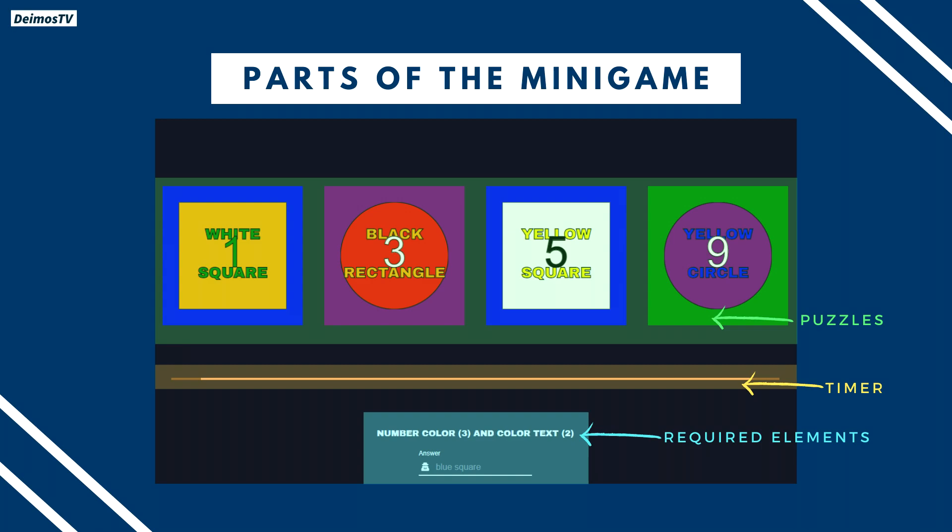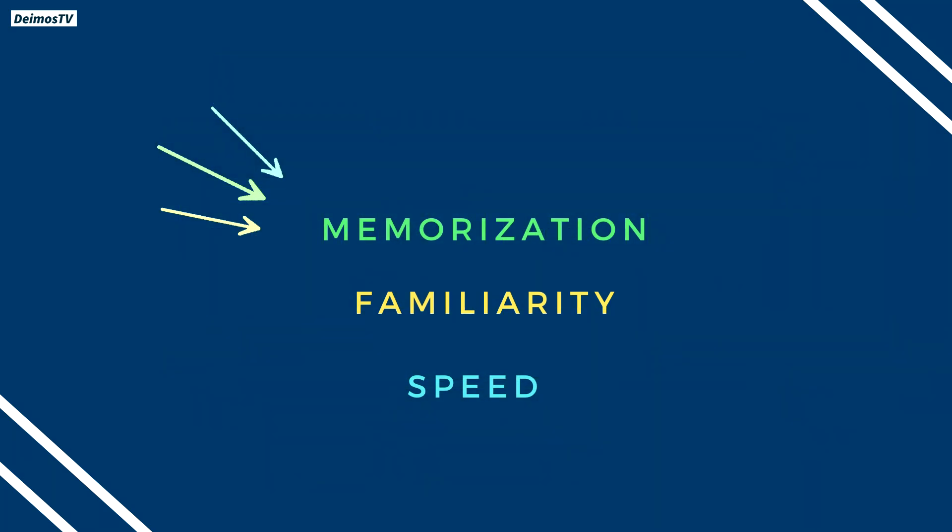After identifying those elements, you need to put your answers in the text box below. You have to be fast in identifying the required elements and typing the answer. If you still don't understand it, all you need to know is that it's all about memorization, familiarity, and speed.